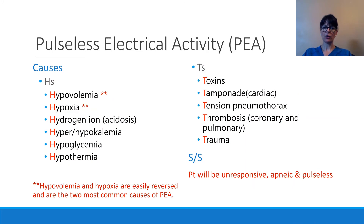The causes of pulseless electrical activity are usually classified as the H's and T's. The H's can be hypovolemia and hypoxia, which are the two most common reasons for PEA and can be easily reversed — something we have to keep in the back of our minds when assessing a patient in PEA. Hydrogen ion, meaning acidosis, is another cause.